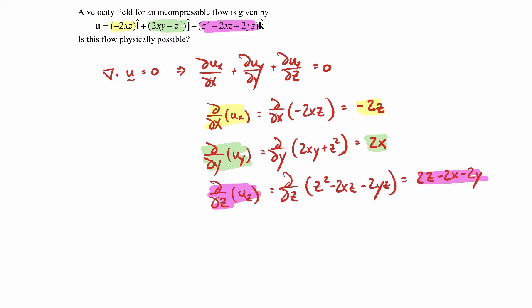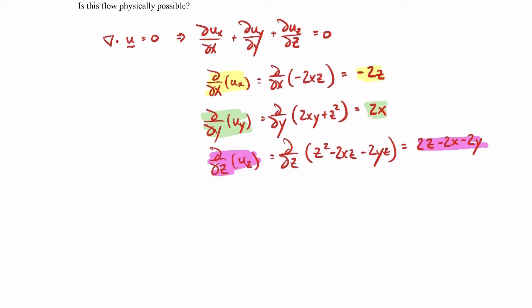All right, so then those should sum together if this is a real flow - those should sum together and equal zero if this satisfies the continuity equation. So when we substitute in, dux/dx is minus 2z, duy/dy is 2x, duz/dz is 2z minus 2x minus 2y. The question is, does it equal zero?